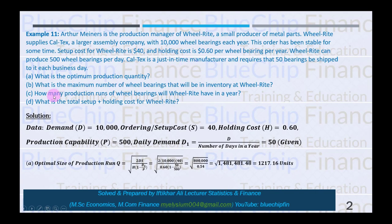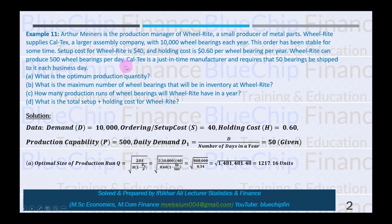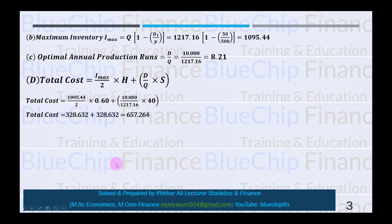The third requirement is how many production runs Wheelwright will have in a year. Annual demand is 10,000 and each optimal production run is Q = 1,217.16 units. Dividing demand by Q gives 8.21, meaning Wheelwright will need approximately 8 or 9 production runs per year.